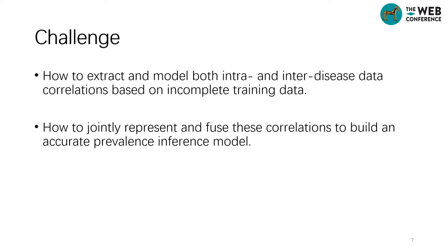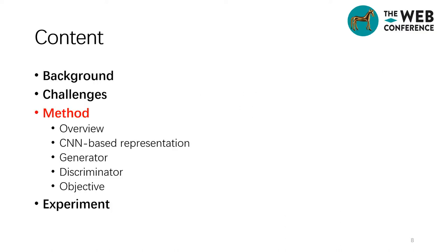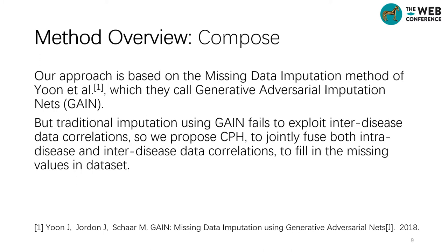Although the above two types of data correlations have been demonstrated, there are still technical challenges to realizing the vision of CPH. First, how to extract and model both intra- and inter-disease data correlations based on incomplete training data, and how to jointly represent and fuse these correlations to build an accurate prevalence inference model. By jointly considering these challenges, we propose CPH. Our approach is based on the missing data imputation method called Generative Adversarial Imputation Nets (GAIN). However, traditional imputation using GAIN fails to exploit inter-disease data correlations, so we propose CPH to jointly fuse both intra- and inter-disease data correlations to fill in the missing values.